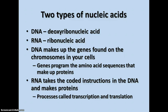DNA makes up the genes found on the chromosomes in your cells. The main job that genes have is to program the amino acid sequences that make up proteins. The protein's structure and function is determined by the sequence of amino acids in the first order of structure, and this is programmed by the DNA. RNA takes the coded instructions from the DNA and uses it to make the proteins.